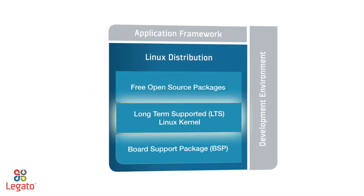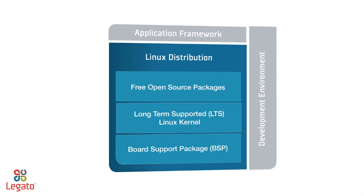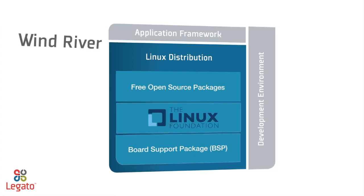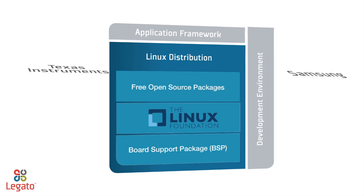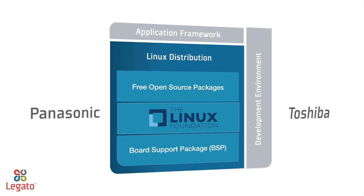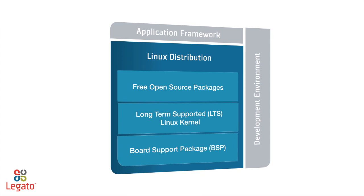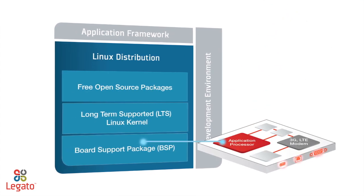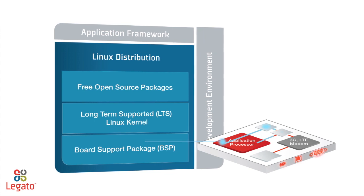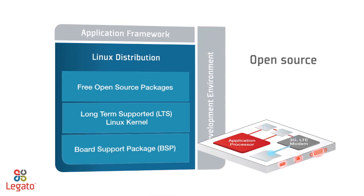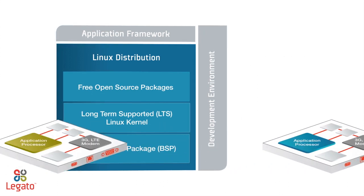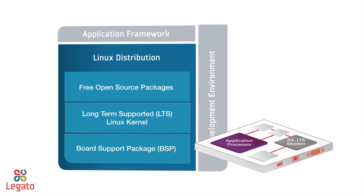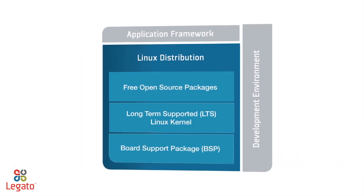Based on the long-term supported Linux kernel hosted by the Linux Foundation, you can leave kernel updates to the embedded systems industry and focus on new value-add feature development. The fully-baked board support package includes support for hardware interfaces and power management and has been validated on next-generation AirPrime smart modules. And remember, it's all open-source, so if you decide to change your application processor, you don't have to throw away all the software invested in existing projects. You can simply port Legato over.